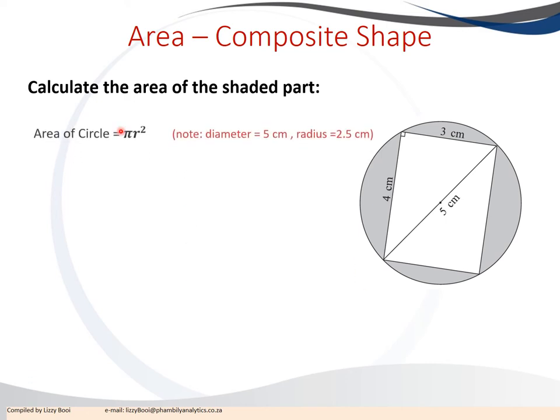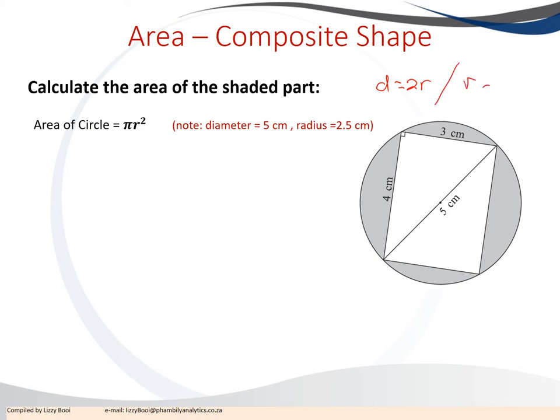First, we calculate the area of the circle. The formula is πr². The diameter of this circle is five centimeters. Since the diameter is two times the radius, or the radius is diameter over two, we divide five by two to get 2.5 centimeters. Then we substitute into the formula.